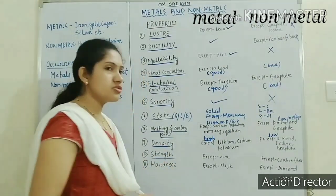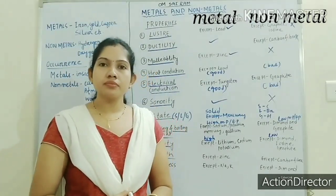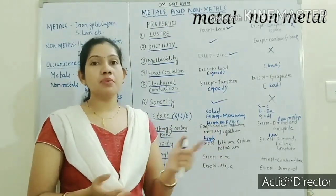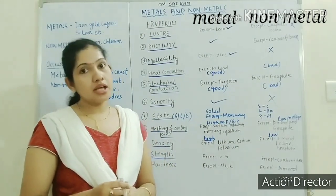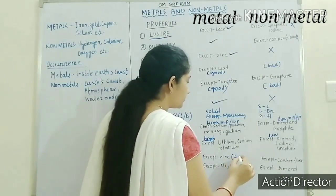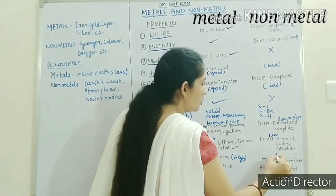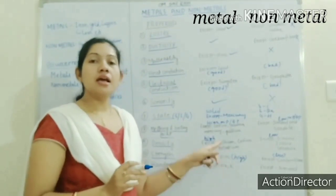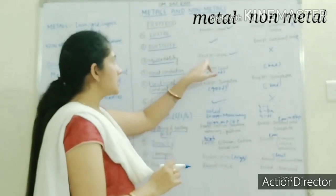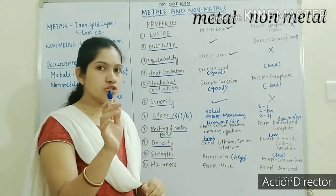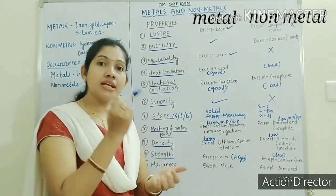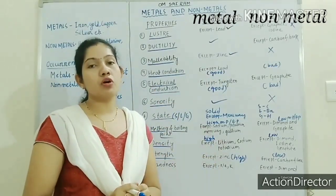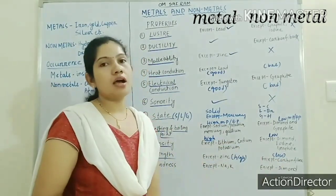Next is strength — the ability to resist breaking. Metals have high strength and non-metals have low strength. Exception for metals: zinc is a metal having low strength, which is why zinc is non-malleable. When beaten, it cannot form into a sheet but will break into powder. Exception for non-metals: carbon fiber has high strength.